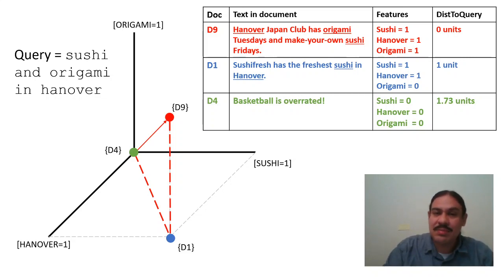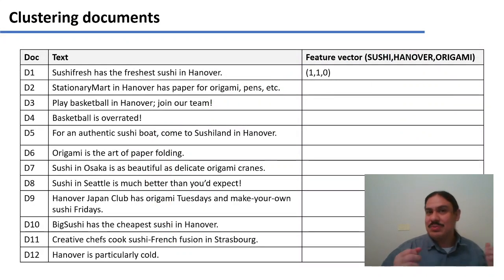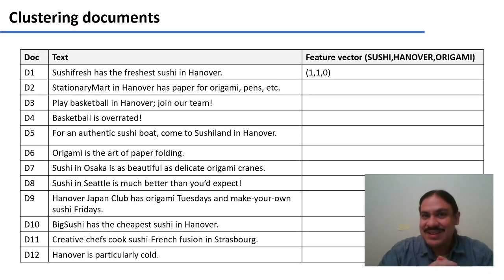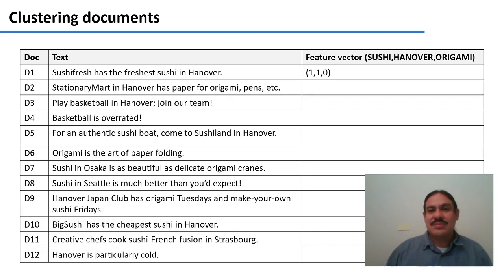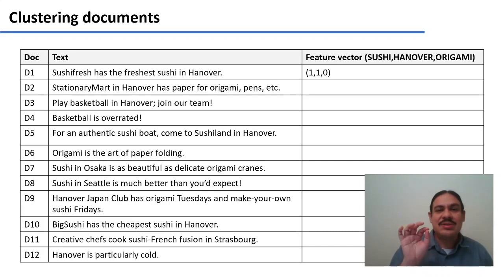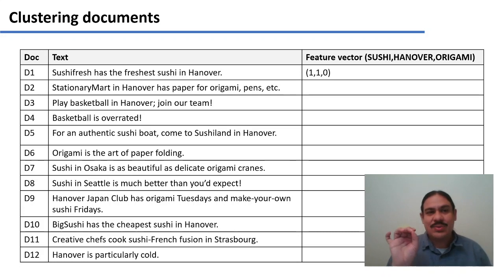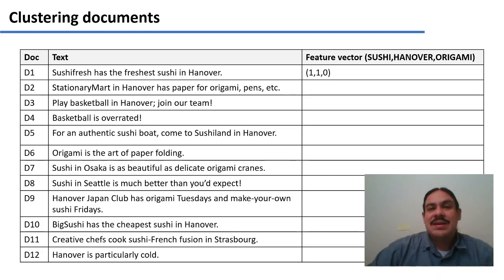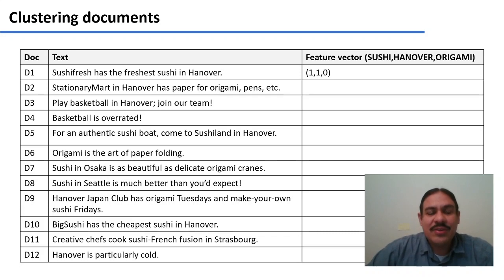This is what we looked at last time. Let's continue to explore this feature system — it seems arbitrary, but it's working so far. Here we have our original 12 documents; think of them as very small web pages. We have the feature system: whether a document has 'sushi' or not, 'Hanover' or not, 'origami' or not. The first document is described as 1,1,0 because it has 'sushi' and 'Hanover' but not 'origami'. Now try it yourself — figure out the features for the other 11 documents and pause the video.